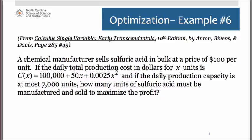This last example of an optimization modeling problem is one that comes out of our textbook on page 285. It's number 43, a great business application of the calculus.